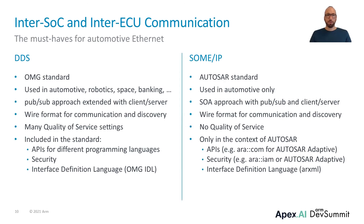SOME/IP and DDS are must-haves for automotive Ethernet today. DDS, the Data Distribution Service, is an OMG standard that has its origin in mission-critical systems. It is already used in many different domains and is becoming more and more relevant for automotive. SOME/IP, on the other side, is a protocol that has so far only been used in automotive — it was specified by BMW and then standardized in AUTOSAR. Both technologies can be used for publish-subscribe and client-server communication, and they also define how data is serialized and how communication endpoints can be discovered. DDS is much more than just a wire protocol, as it also specifies things like APIs in different programming languages and an interface definition language. For SOME/IP, such aspects are only covered when it is used in the context of AUTOSAR.